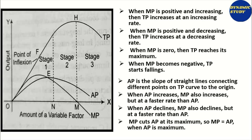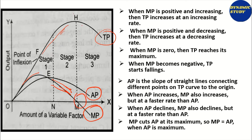Different stages of production function show the relationship between marginal product, average product, and total product. When marginal product increases, total product is increasing. When marginal product is positive but decreasing, total product increases at a decreasing rate. When marginal product is zero, total product reaches its maximum. When marginal product is negative, total product declines. At the point where marginal product and average product are equal, marginal product then declines faster than average product.